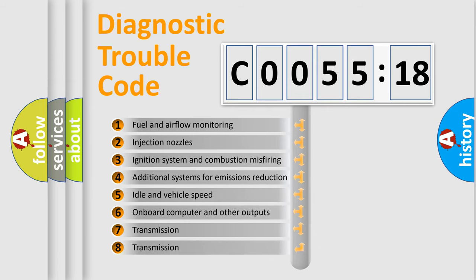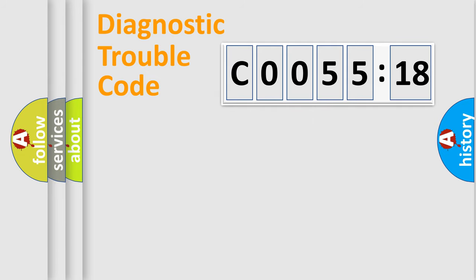The third character specifies a subset of errors. The distribution shown is valid only for the standardized DTC code. Only the last two characters define the specific fault of the group.